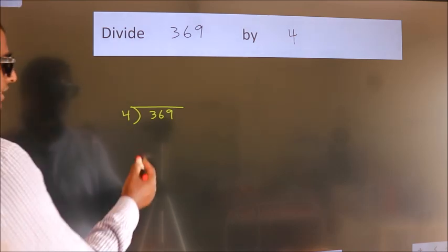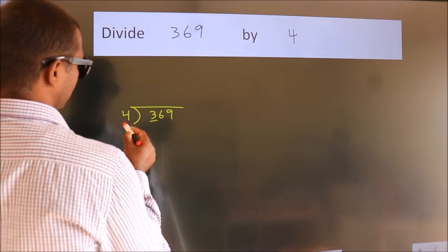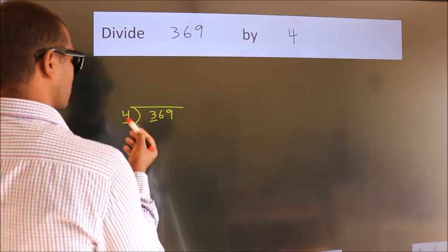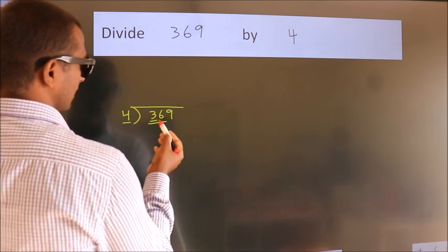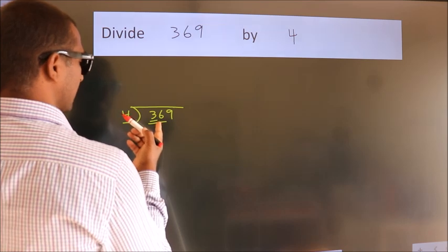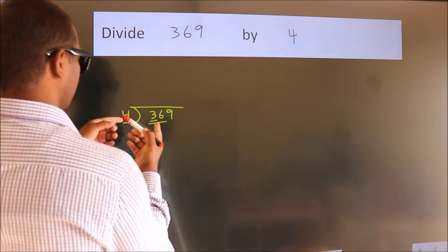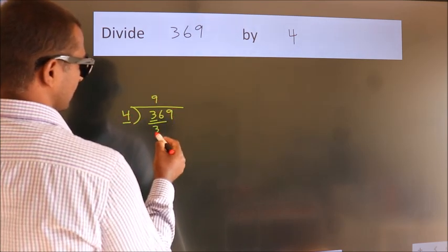Next. Here we have 3, here 4. 3 is smaller than 4. So we should take 2 numbers, 36. When do we get 36? In the 4 table, 4 nines, 36.